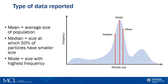Now let's go over what data are reported by laser diffraction and look into distribution statistics. The choice of statistical parameter will depend on how the data will be used and what they will be compared with. To report the most common particle size in a distribution, we can choose between the following parameters: mean — the average size of the population; median — the size at which 50% of particles have a smaller size; and mode — the size with the highest frequency.